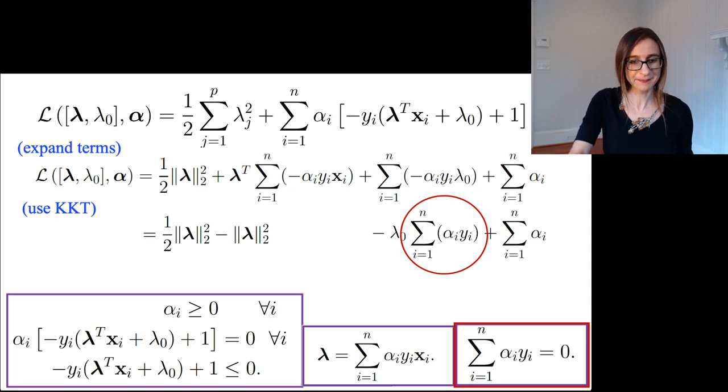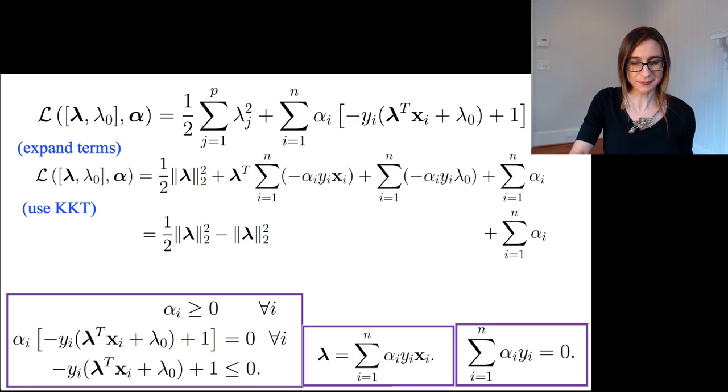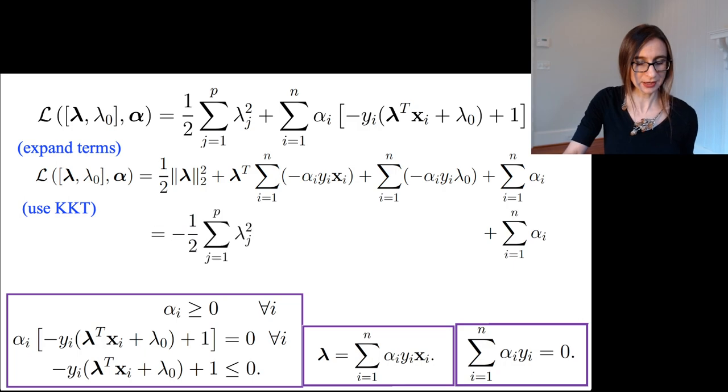The only thing I really need to do now is notice that the first two terms actually add up - they're just negative one half norm of lambda squared.